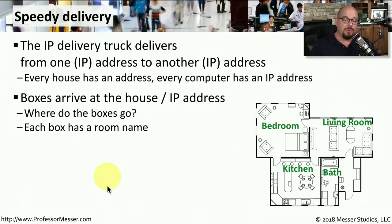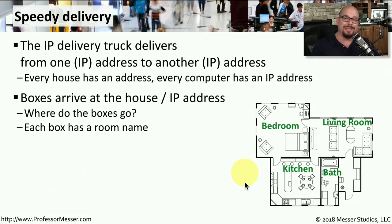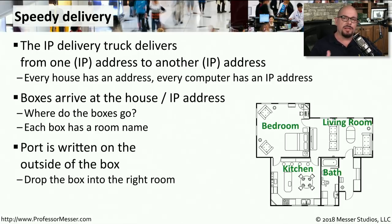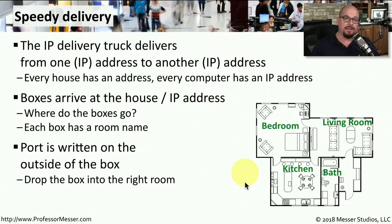For example, boxes may arrive at a house marked bedroom, living room, kitchen, or bath — and you know exactly where each box goes. With IP, the process is similar, but instead of a room name we use a port number. This way, we can send information into a server and know exactly which service on that server needs to receive that data.